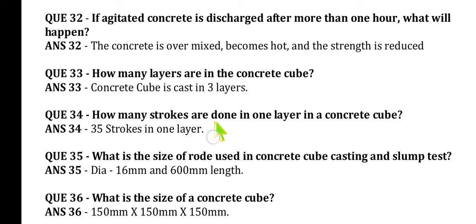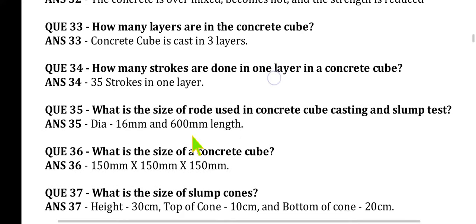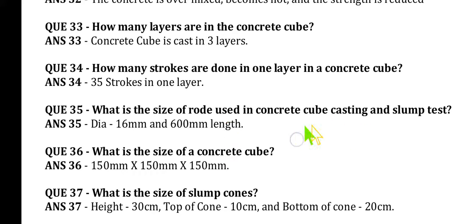Question 34: How many strokes are done in one layer in concrete cubes? 35 strokes per layer is the standard, but normally 25 strokes per layer are used. Question 35: What is the size of the rod used in concrete cube casting and slump test? The diameter is 16 mm and the length is 600 mm (60 cm).